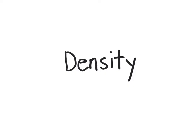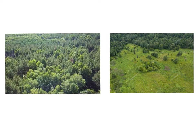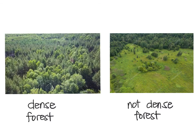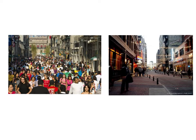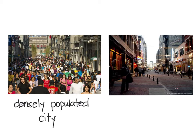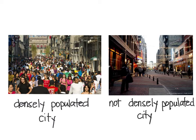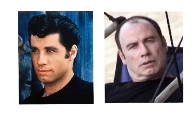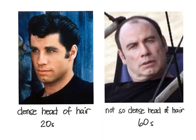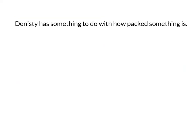What does that mean? Well let's do some comparisons. Here is a picture of two forests — this one is dense, this one is not. How about city streets? This city is dense, but this city is not. And now let's look at John Travolta's scalp in his 20s and now in his 60s. His scalp was definitely more dense in his 20s. Density has something to do with how packed something is.